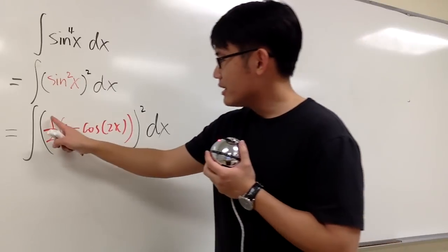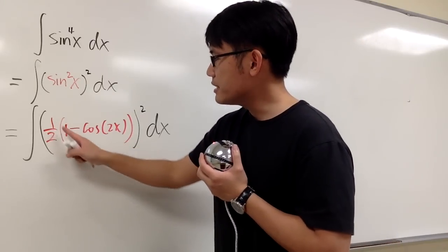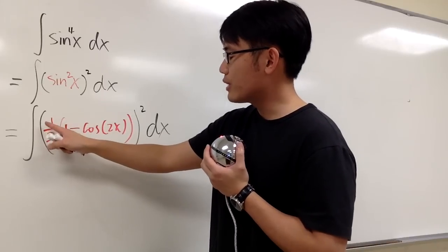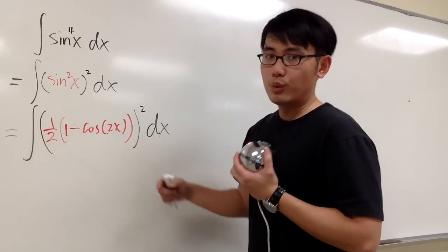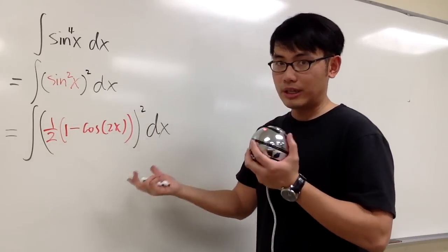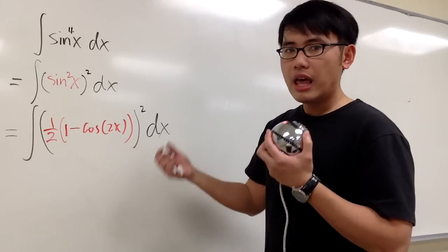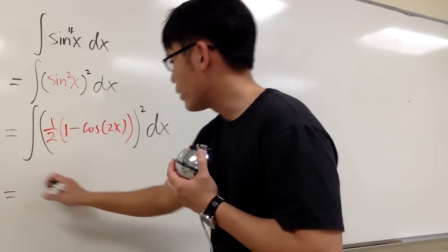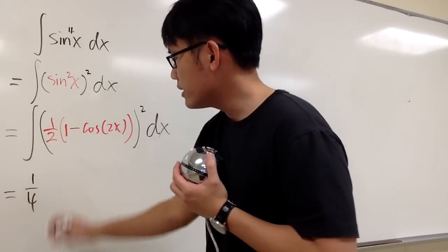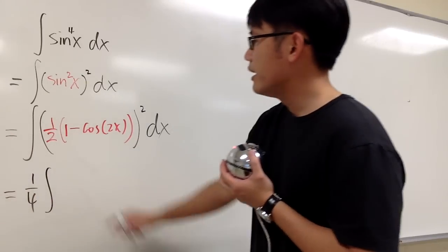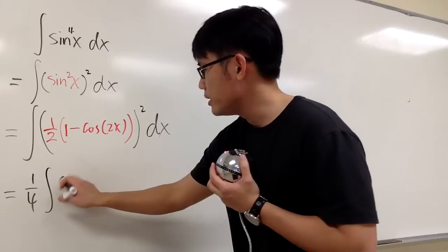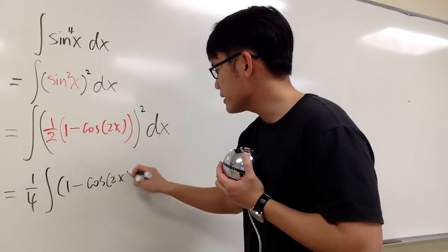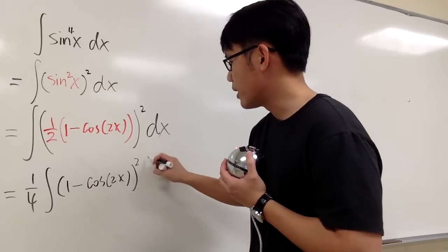So this right here is a one-half — it's a constant multiple of this expression. We can look at this as one-half to the second power, which is a constant multiple. That constant is 1 over 4. I can take the 1 over 4 to the front. So we have 1 over 4 out in front, and the integral of 1 minus cosine of 2x, raised to the second power, dx.